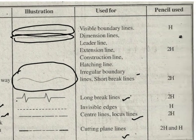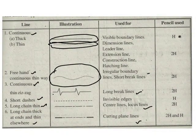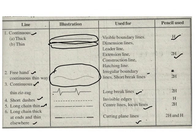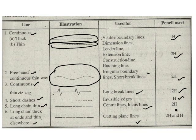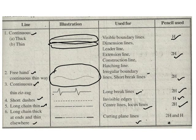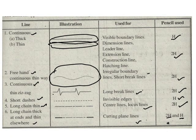The pencils that must be used for illustrating the following lines are given in the fourth column. Continuous thick and thin lines must be drawn using H and 2H pencil. Freehand continuous thin wave, continuous thin zigzag, short dashes, long chain thin, and long chain thick at end and thin elsewhere lines must all be drawn using a 2H pencil. In summary, a 2H pencil must be used to draw thin lines and an H pencil must be used to draw thick lines.